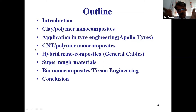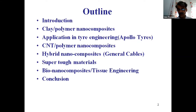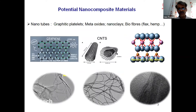Then I will take you to carbon nanotubes — we incorporated carbon nanotubes into polymers and into fibers to make wonderful things. I will also tell you about my activities with General Cables in the United States, the biggest cable company in the US, where we put hybrid nanofillers into polymers. Then I will cover super tough materials — work with the Department of Space in India — and finally, bio nanocomposites, where we extract nanomaterials from nature to make bio nanocomposites for tissue engineering.